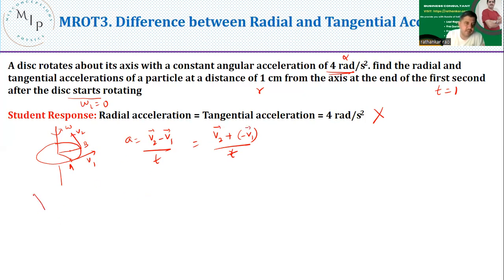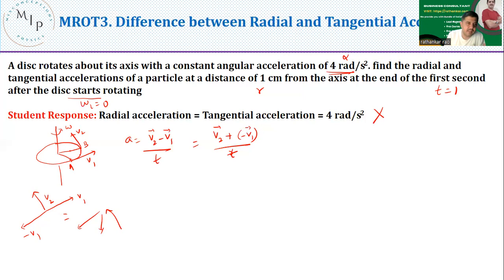To add the vectors: v2 points in one direction, v1 in another, so −v1 is opposite to v1. Let me correct myself — v2 is like this, and −v1 is like this. The sum of these two vectors is given by the triangle rule, and the resultant points along a specific direction.